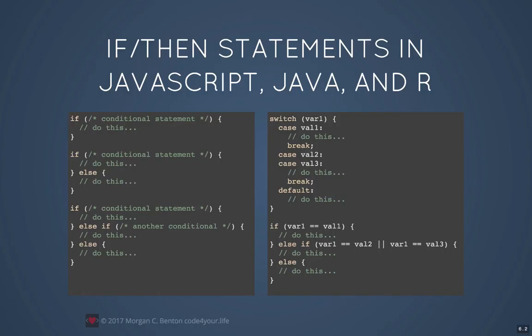We can also use a switch-case statement, which is based on comparing the value of a variable to multiple alternative values. In this case, var1 is the control variable. If it equals value 1, the code in the first block executes. If it equals value 2 or value 3, the code in the second block executes. If it doesn't equal any of those values, the default block executes. This is more or less equivalent to an if-else-if-else statement.